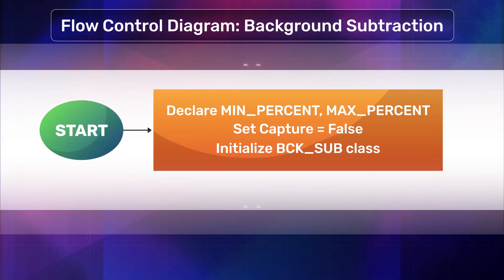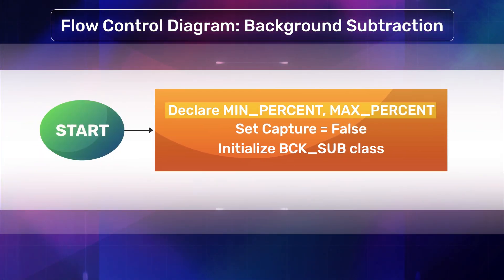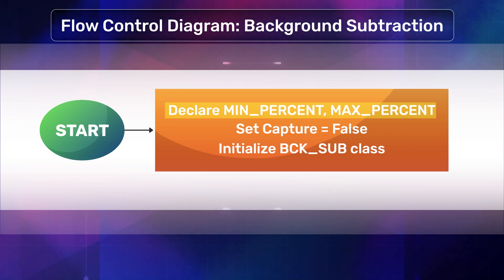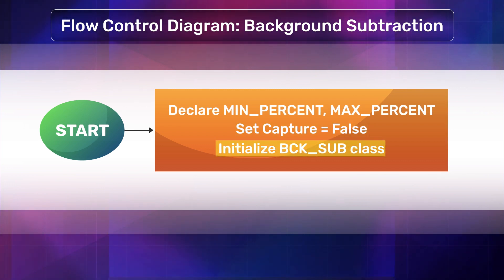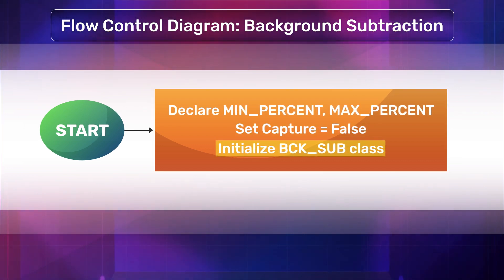The background subtraction method starts by declaring the min and max thresholds of the mask that handles the motion in the video. It also sets the capture flag to false and initializes the background subtraction class, which is either KNN or GMG.